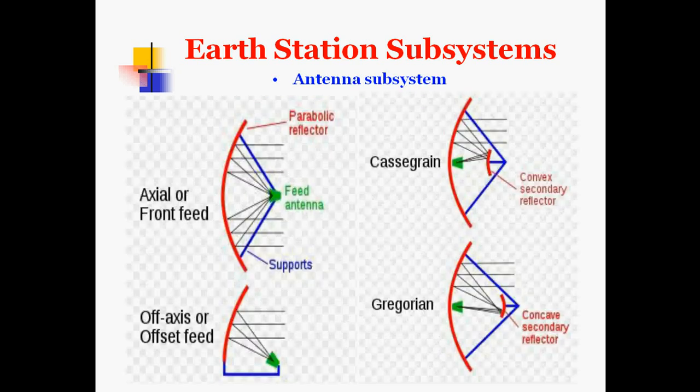Different types of feed antennas can be used: axial or front feed, off-axis or offset feed. Cassegrain and Gregorian antennas can also be used as part of the antenna subsystem.